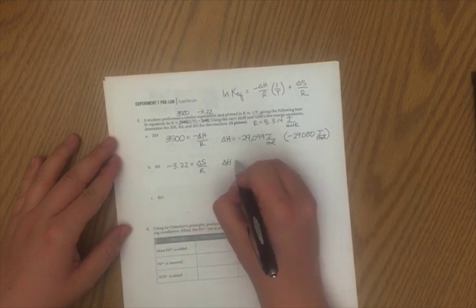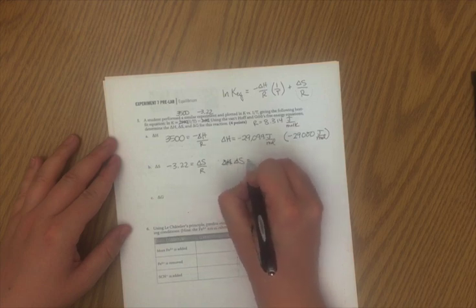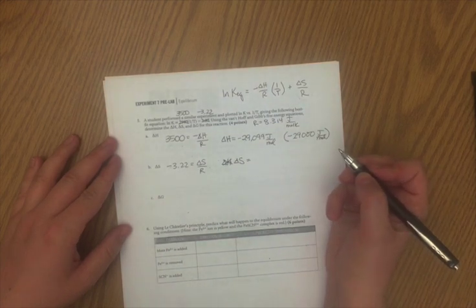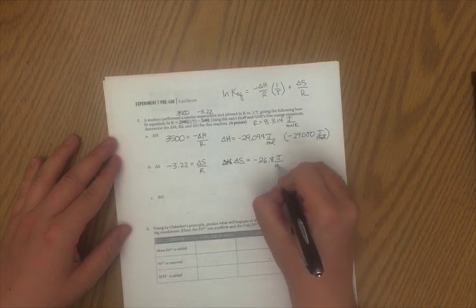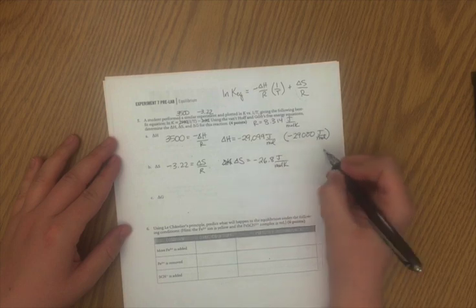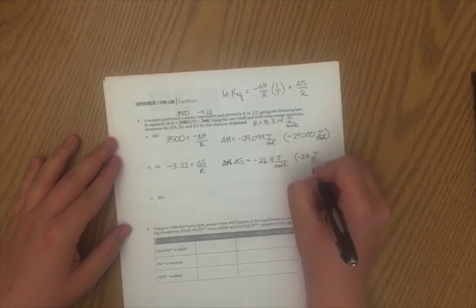And my ΔS equals negative 26.8 joules per mole Kelvin. Again, you could also write here negative 27 joules per mole Kelvin.